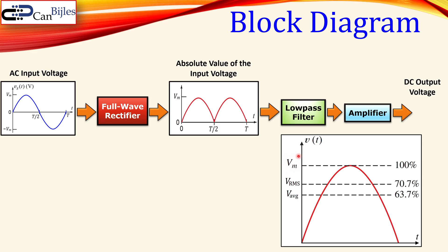So if you have 10 volts peak, you'll get only 6.37 volts. We need to compensate for this reduction — that is the reason for having the amplifier here. We will see shortly in detail how we can do that.